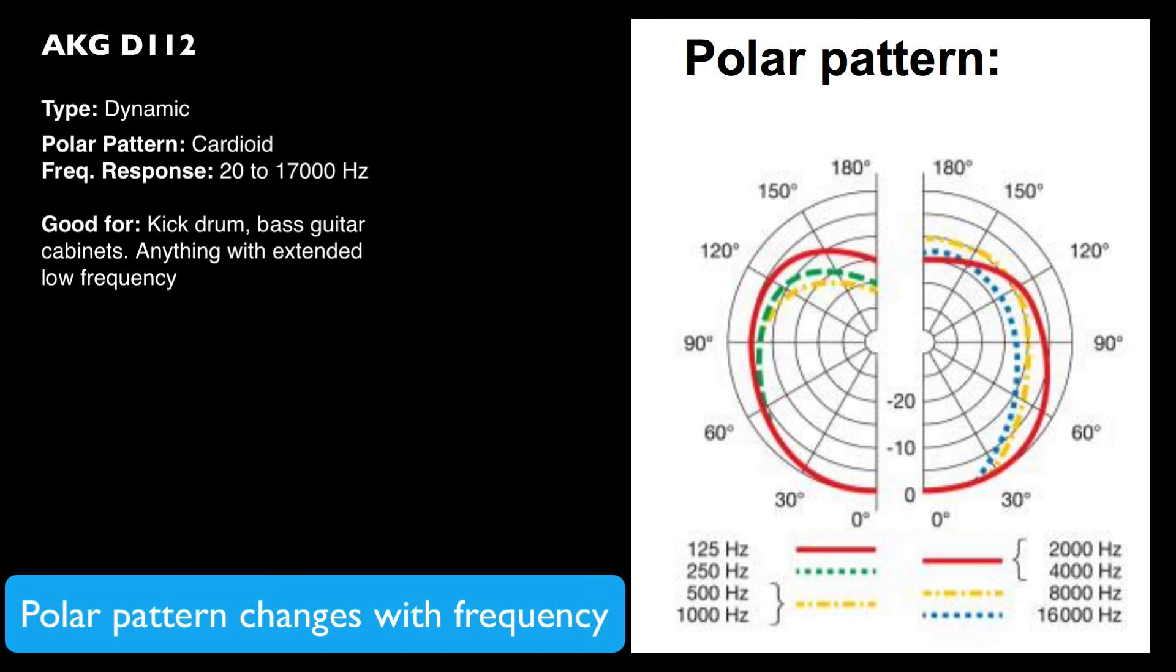If we're looking at this diagram here, the red line represents 125 hertz. You'll see that the polar pattern is wider on that red line at 125 hertz. If we look up at a higher frequency at say 16,000 hertz at the top, which is the dotted blue line, the polar pattern is far tighter, much narrower. That shows you how polar pattern does change across the frequency range, and typically microphones are more directional at high frequencies than they are at low frequencies.